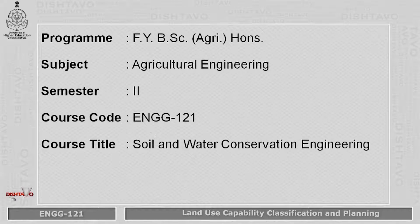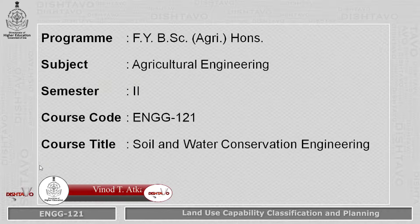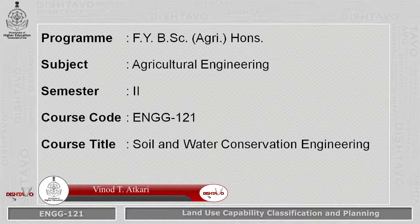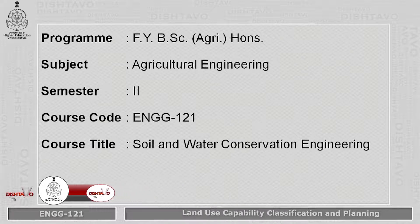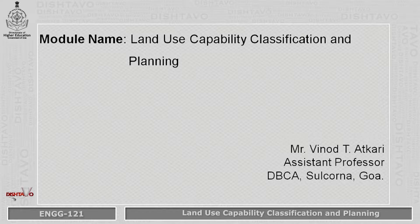Hi all, I'm Mr. Vino Datukari, Assistant Professor, Department of Agricultural Engineering, Don Bosco College of Agriculture, Sulukurna, KP, Goa. Today I will take the fourth module of the course Soil and Water Conservation Engineering, having course code Engineering 1 to 1, for the second semester of first year B.Sc. Agricultural Honours. The module name is Land Use Capability Classification and Planning.